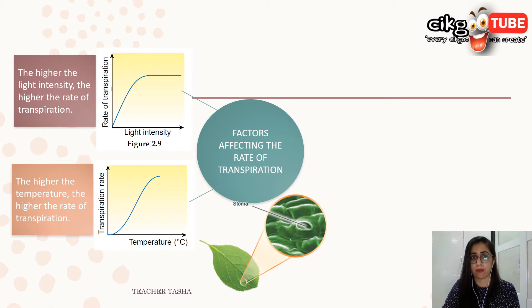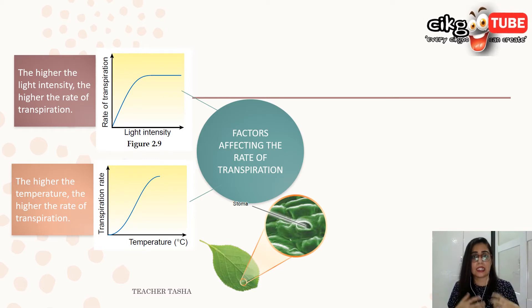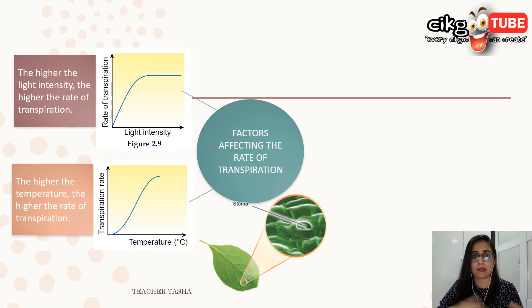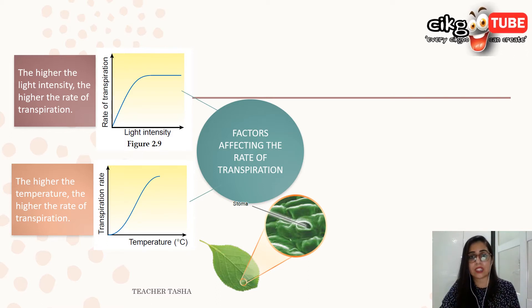Next, temperature: the higher the temperature, the higher the rate of transpiration. High temperature increases the kinetic energy and movement of water molecules, so they move out through the stomata more quickly. As water keeps evaporating from the leaf, the plant must absorb more water from the roots. The evaporation rate in the mesophyll cells increases, and so the rate of transpiration increases.